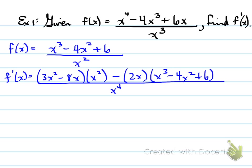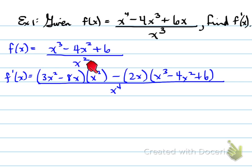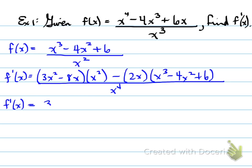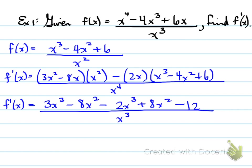In the numerator, I can pull out something that will simplify the denominator. Each of these terms has an x that I can pull out — only 1x, because no other x's can be pulled out. When we do that, we get 3x squared minus 8x squared minus 2x cubed plus 8x squared minus 12, all over x cubed.